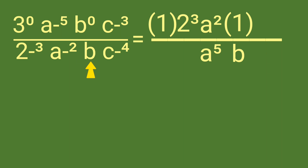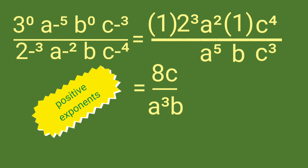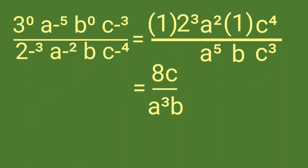Lastly, we have c raised to negative 3 over c raised to negative 4, which is transformed as c raised to 4 over c raised to 3. This expression is now a rational algebraic expression — the final answer — with positive exponents only.